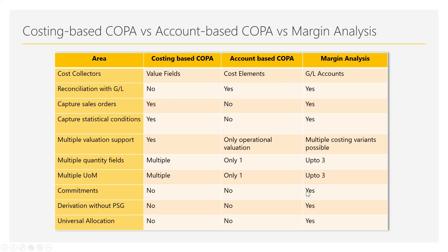New functionalities in margin analysis include commitment capturing — commitments were not recorded in COPA in ERP days in either approach, but now they can be captured in margin analysis. One important focus area SAP is working on is derivation of characteristics without using a profitability segment. Currently, when posting any transaction such as a billing document or invoice, a profitability segment captures the values via derivation or manually, forming the base for COPA.